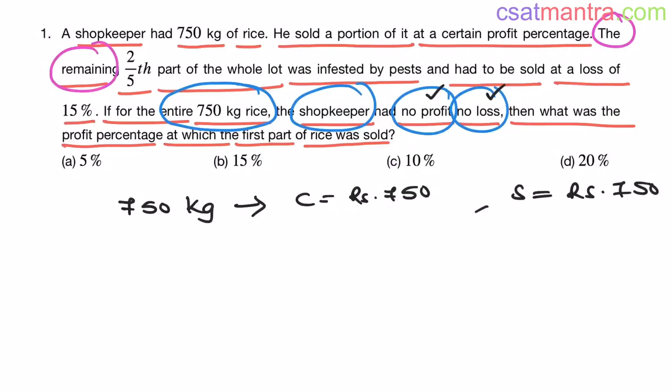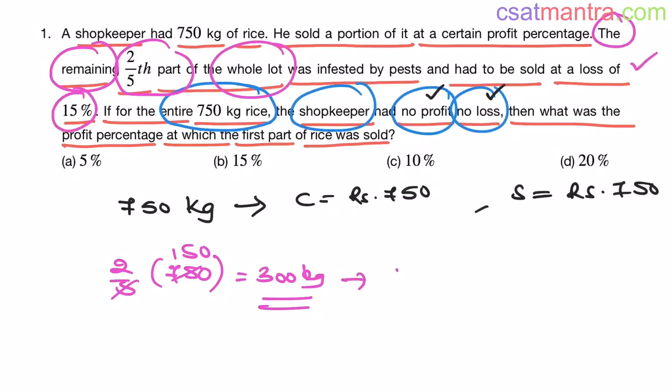Now, the remaining. How much it is? Two-fifth part of the whole lot. Whole lot is the total. So, two-fifth part of it. Two by five of 750 kg, my friends. That is 300 kg. So, he sold this 300 kg at a loss of 15 percentage. What is the cost price of this 300 kg? 300 rupees, my friends. 1 rupee per kg.